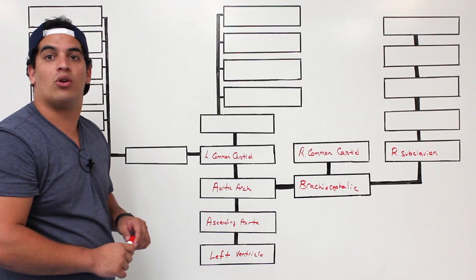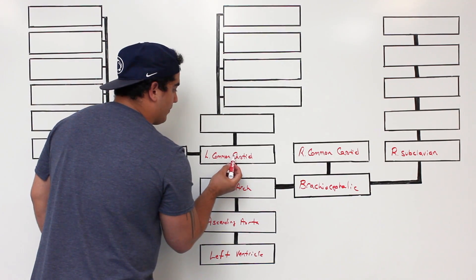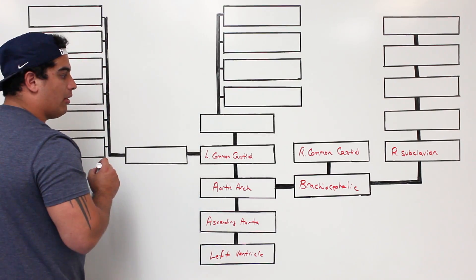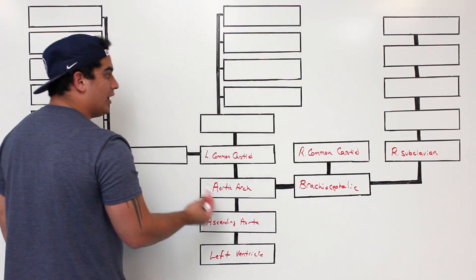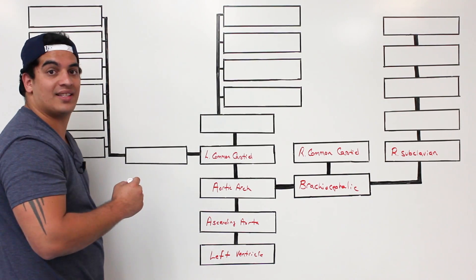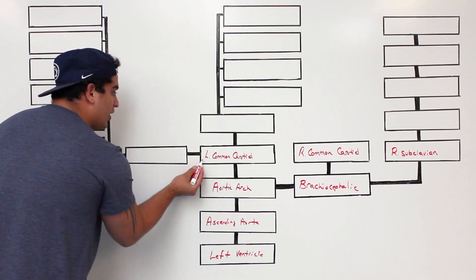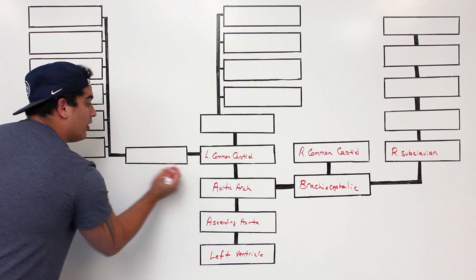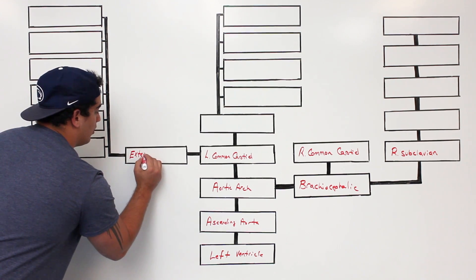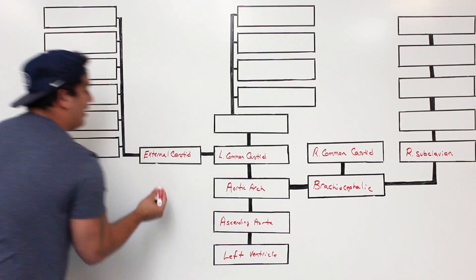Now let's look at the left common carotid. It splits into two components: one goes internal and supplies the Circle of Willis, and the other goes external to supply structures within the face and neck. Let's start with the external carotid artery and work our way to the internal.